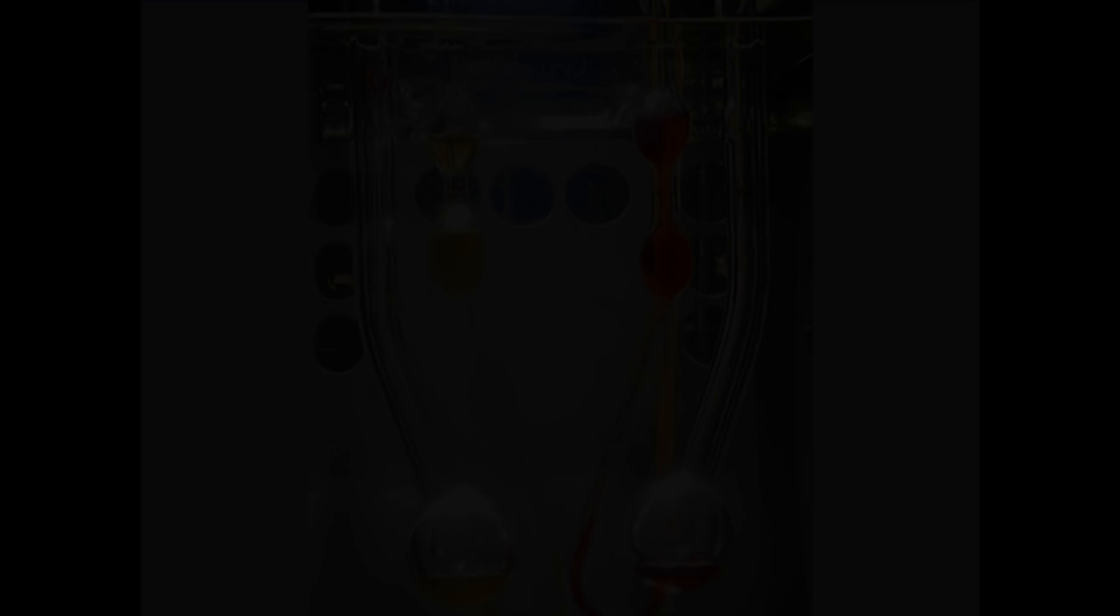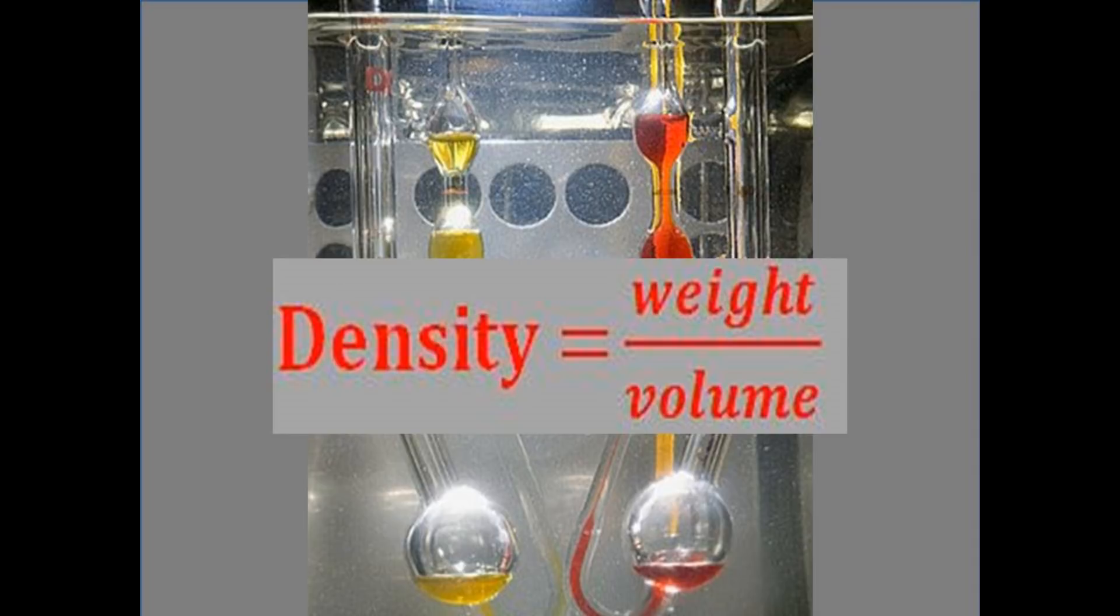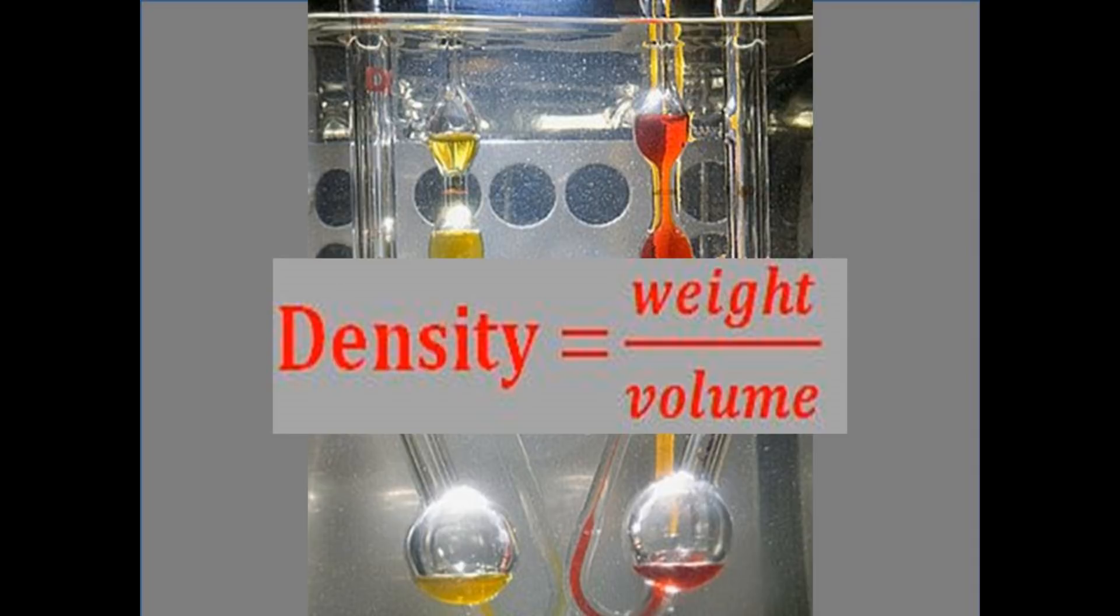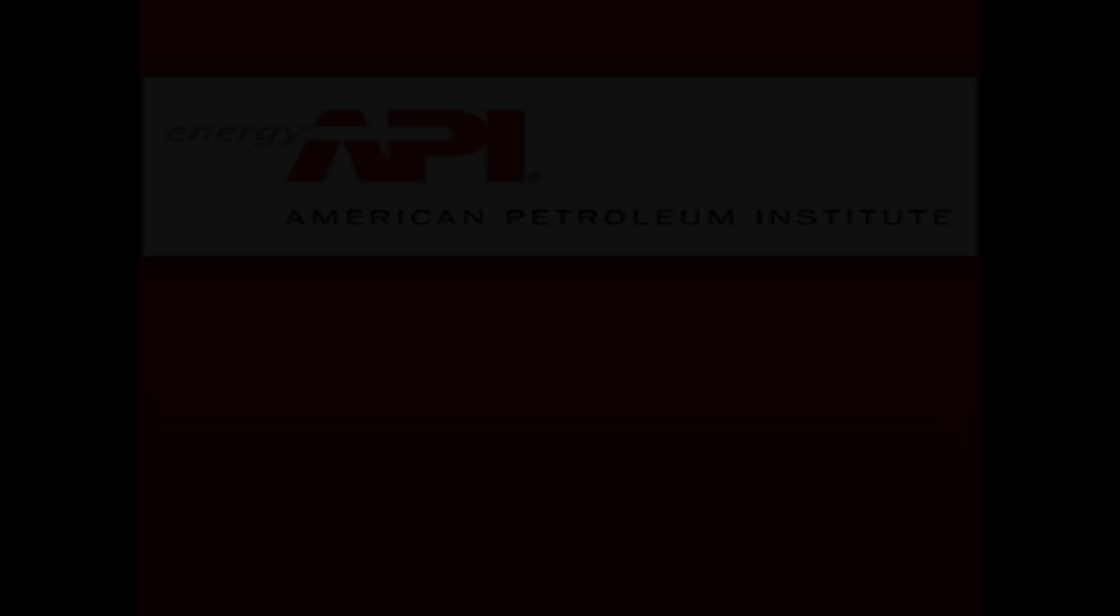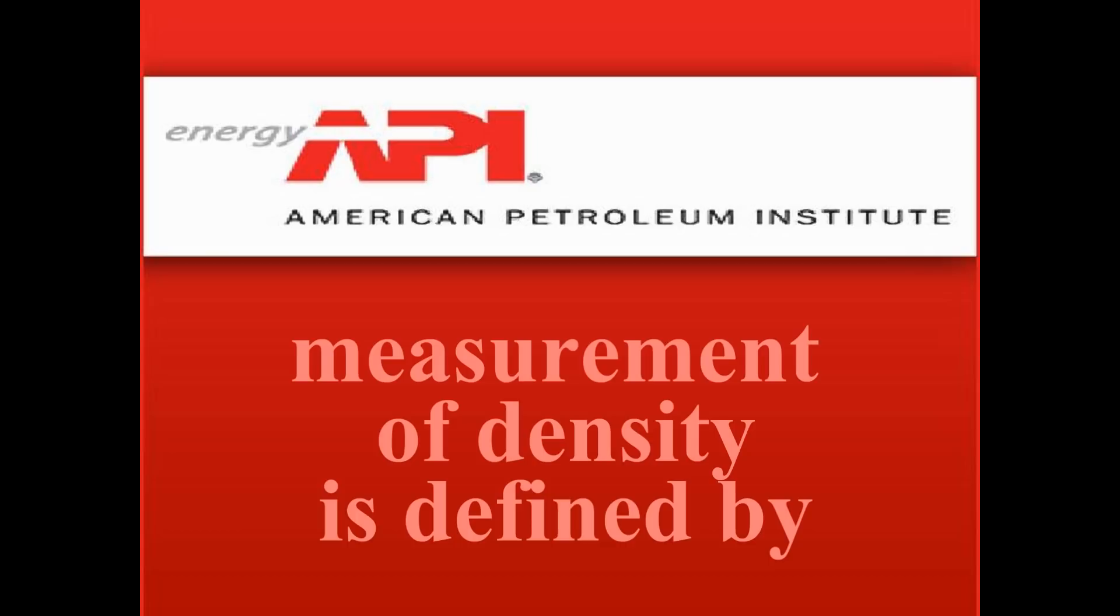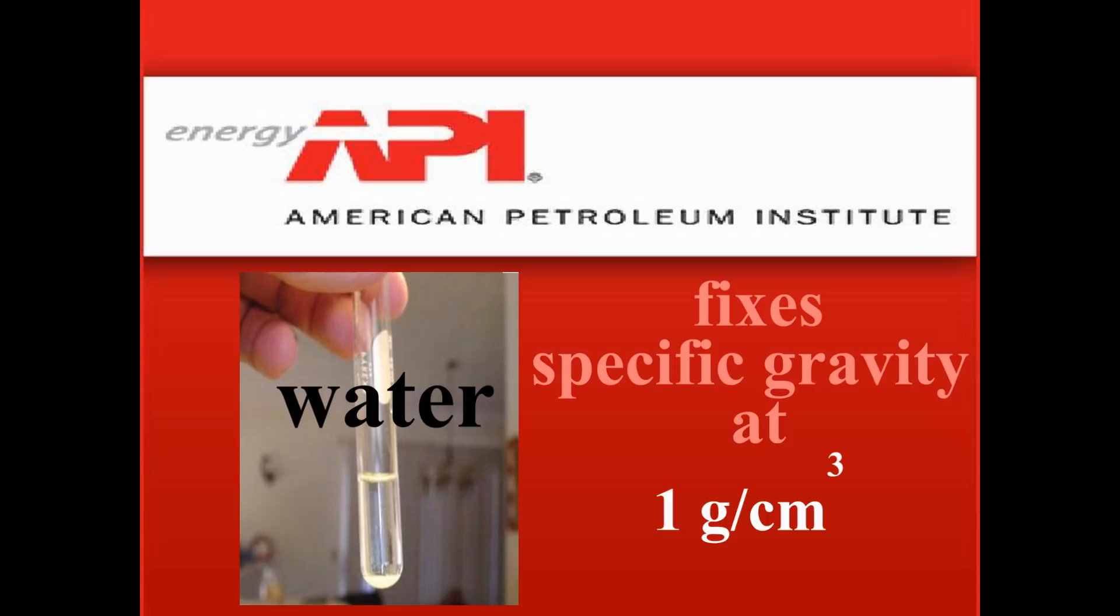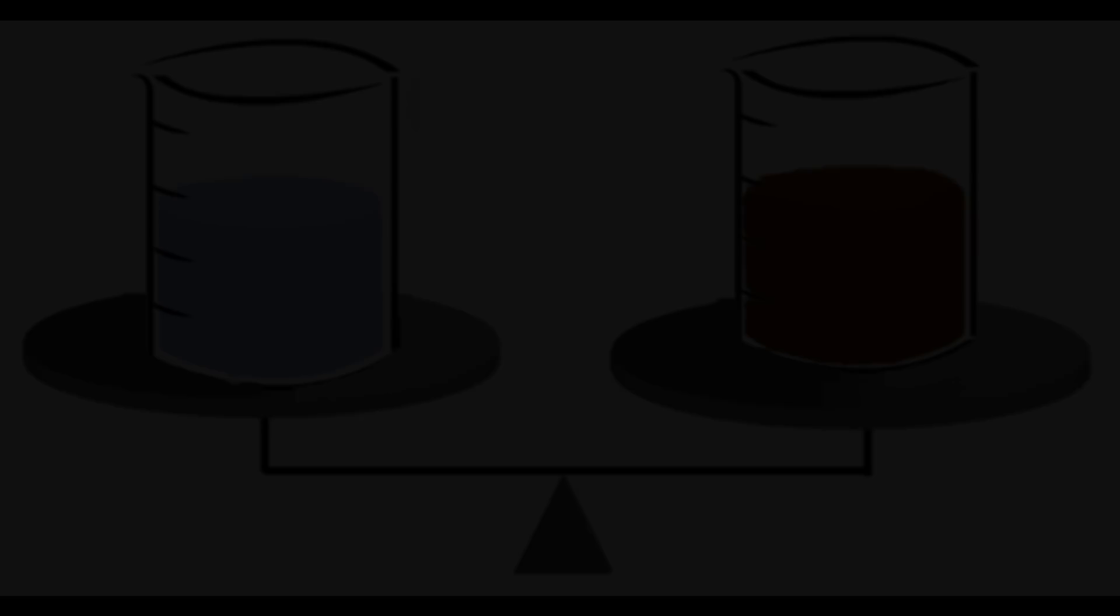Now we need to know how to measure the density of hydrocarbon fluids and understand the significance of these measurements. Remember, density is measured by dividing the weight by its volume. To begin, the measurement of density is defined by the American Petroleum Institute and fixes the specific gravity for water at 1 gram per centimeter cubed. This standard allows us to compare the relative weight of crude oil to the weight of an equal volume of water.